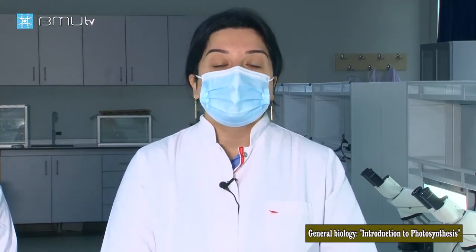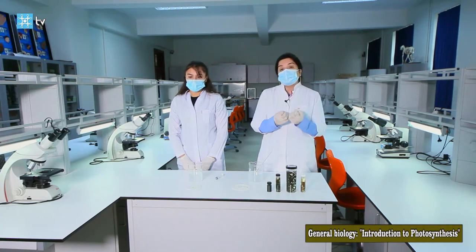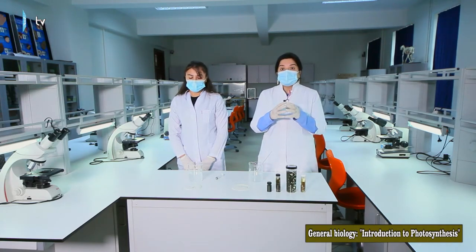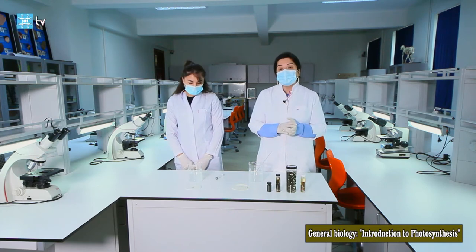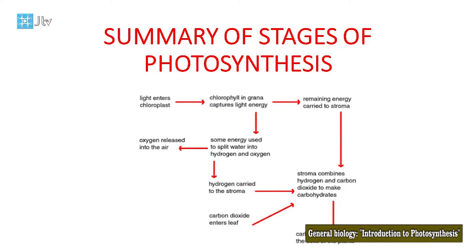All green plants have chlorophyll pigment, and the color of this pigment is green. Chlorophyll pigment uses the light, and by this process — the light-dependent stage of photosynthesis — energy is captured.